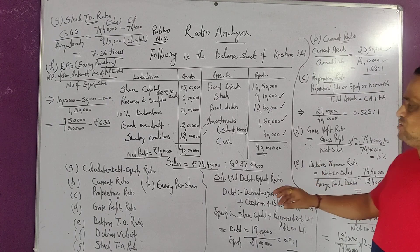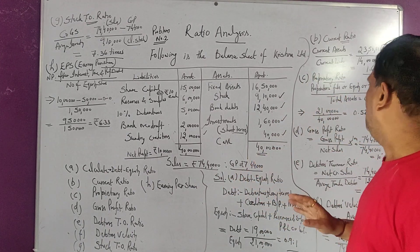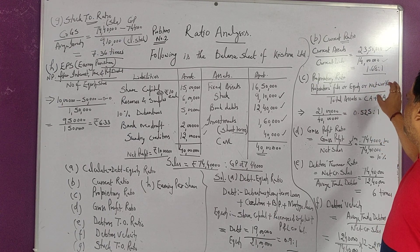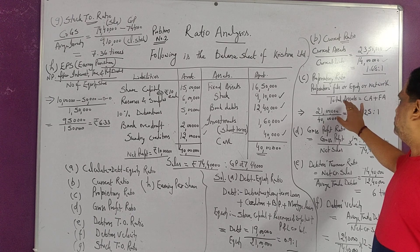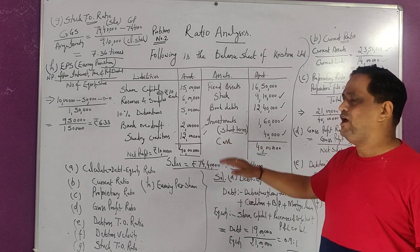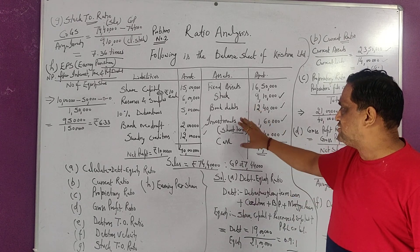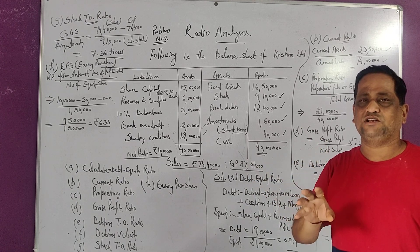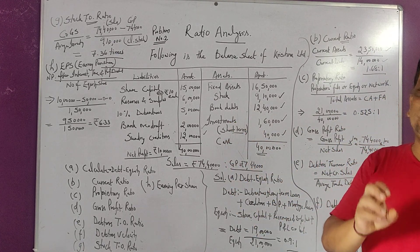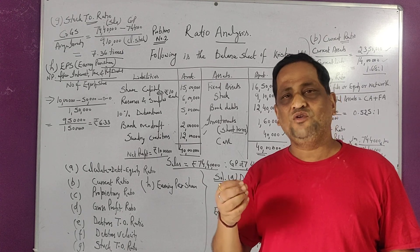After that we come to the third ratio, which is the proprietary ratio — the most important for the company. The formula is: proprietor fund (or equity or shareholder fund or net worth) divided by total assets. Total assets include current assets as well as fixed assets. Students should note that fictitious assets like preliminary expenses or discount on issue of shares should never be taken as total assets — only fixed assets and current assets should be included.